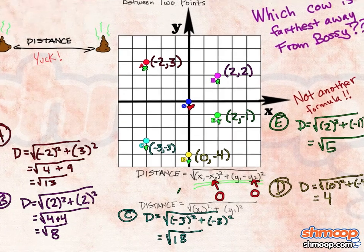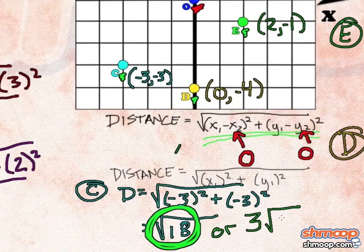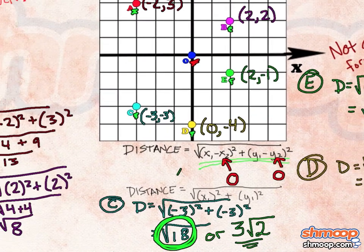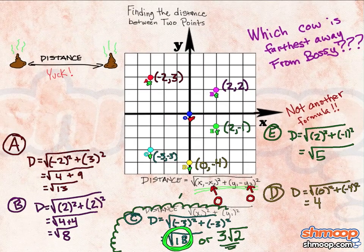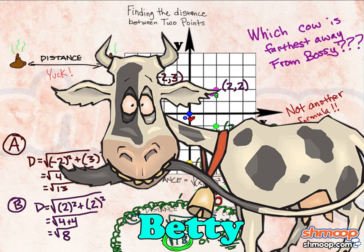The largest of those is the square root of 18, or 3 square root of 2. Which means that Betty, the cow at point C, is the farthest from Bossy. Lucky Betty, let's just hope she's not downwind.